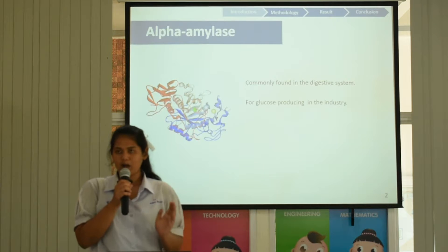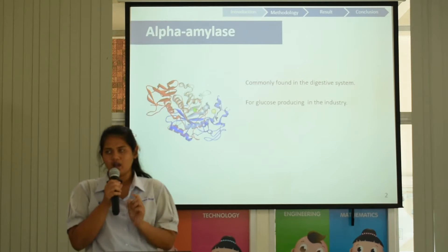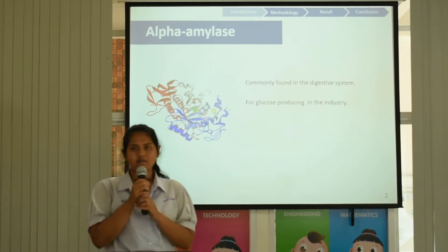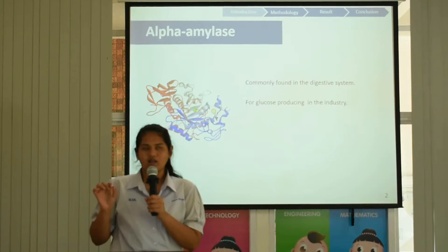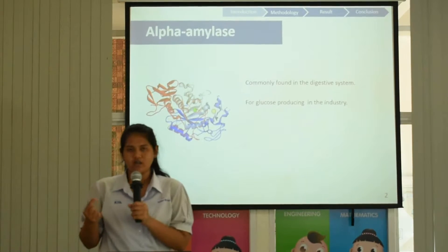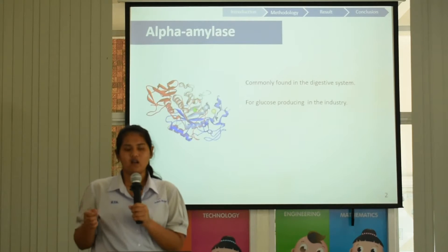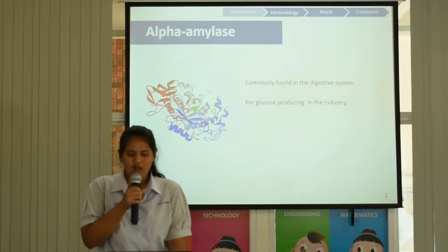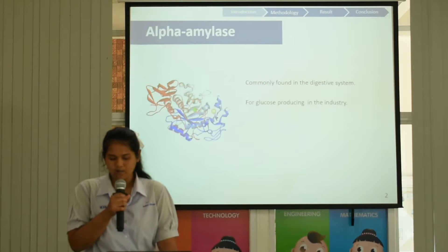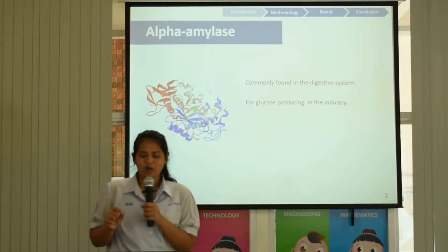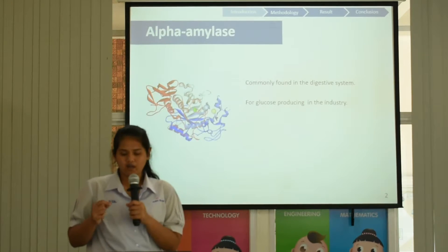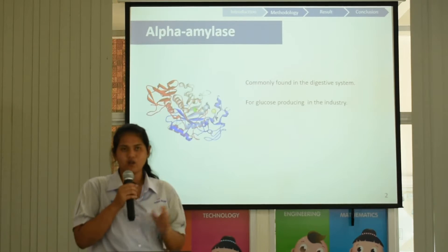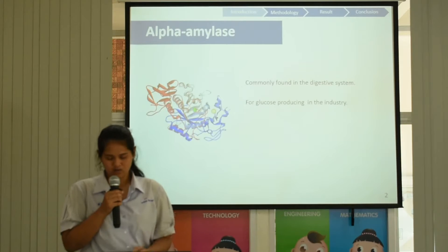When you have alpha-amylase, there is the alpha-amylase enzyme. This enzyme can hydrolyze starch or food sugar, and is commonly found in the digestive system. In the drug field, they use this enzyme to hydrolyze starch in the method of liquid friction after gelatinization to produce glucose.